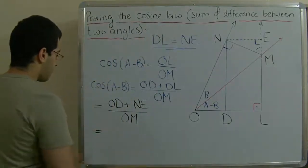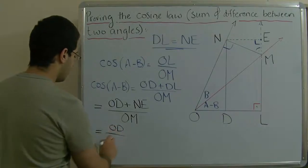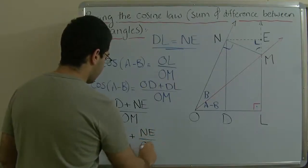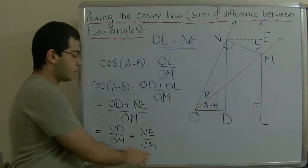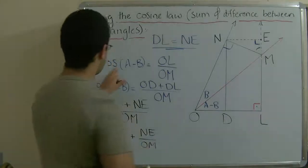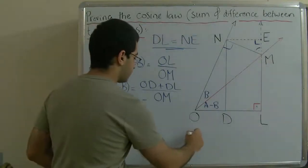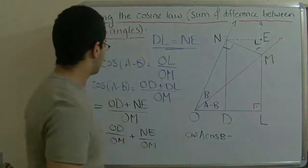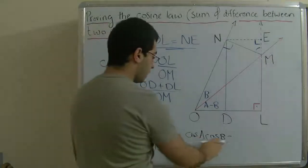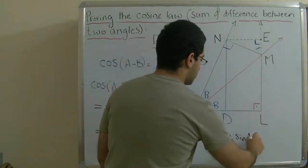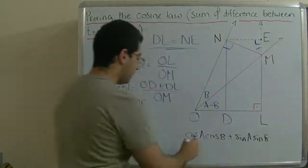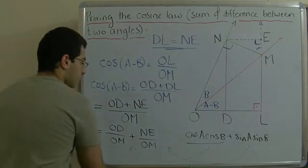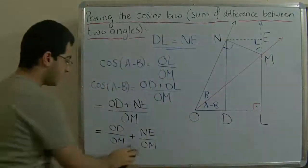We can separate these terms: (OD + NE) / OM = OD/OM + NE/OM. Our rule says cosine(A − B) = cosine A · cosine B + sine A · sine B. We will now rewrite these two terms in another way — this is a bit tricky — to show how each part corresponds to cosine A · cosine B and sine A · sine B.